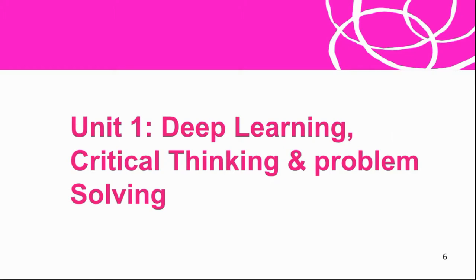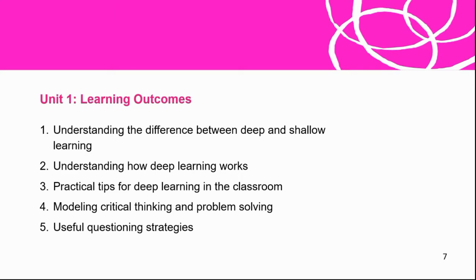We want to now look at Unit One, which is about deep learning, critical thinking, and problem solving — and how deep learning relates to that skill. You'll find that deep learning relates to all of the other core skills. What are the learning outcomes for Unit One? There are five: understand the difference between deep and shallow learning; understand how deep learning works; have practical tips for deep learning in the classroom; how you model critical thinking and problem solving for the kids; and useful questioning strategies you can use in the classroom.